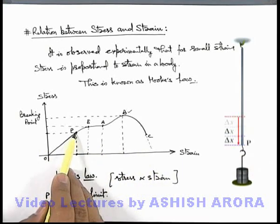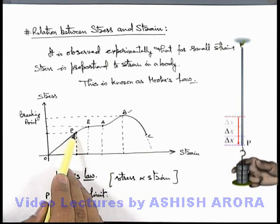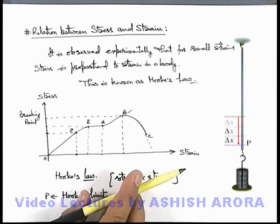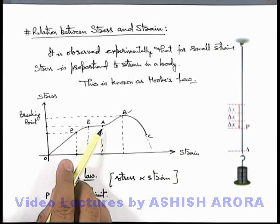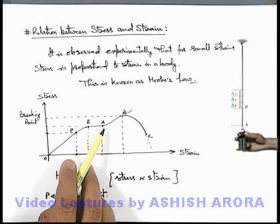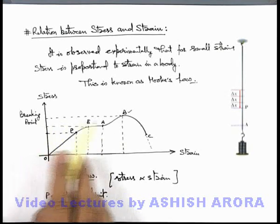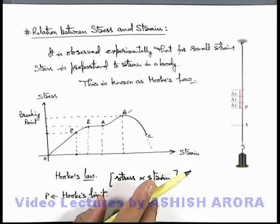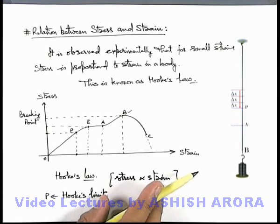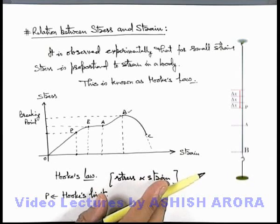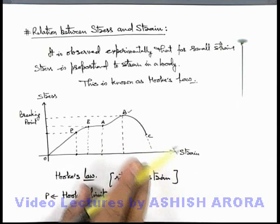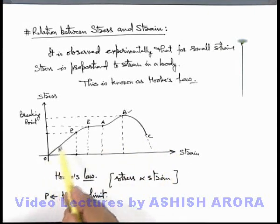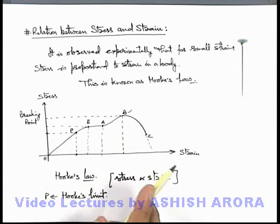Once point P is arrived at, if we place the same mass m again, the elongation will be more than delta x. It continuously increases up to point A. If a slight additional mass is placed so that stress reaches point B, elongation further continues. As soon as point B is achieved and we remove the masses, the rod will continue to elongate and at some point it will break down. This is the phenomenon that takes place, corresponding to what we have studied in the graph — this is how the elasticity of a body changes on application of stress.